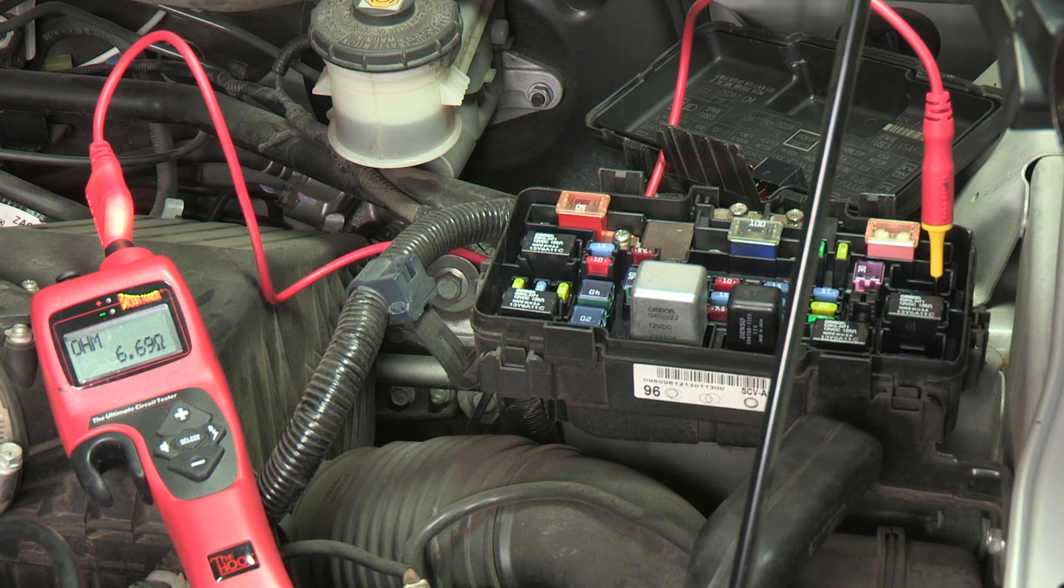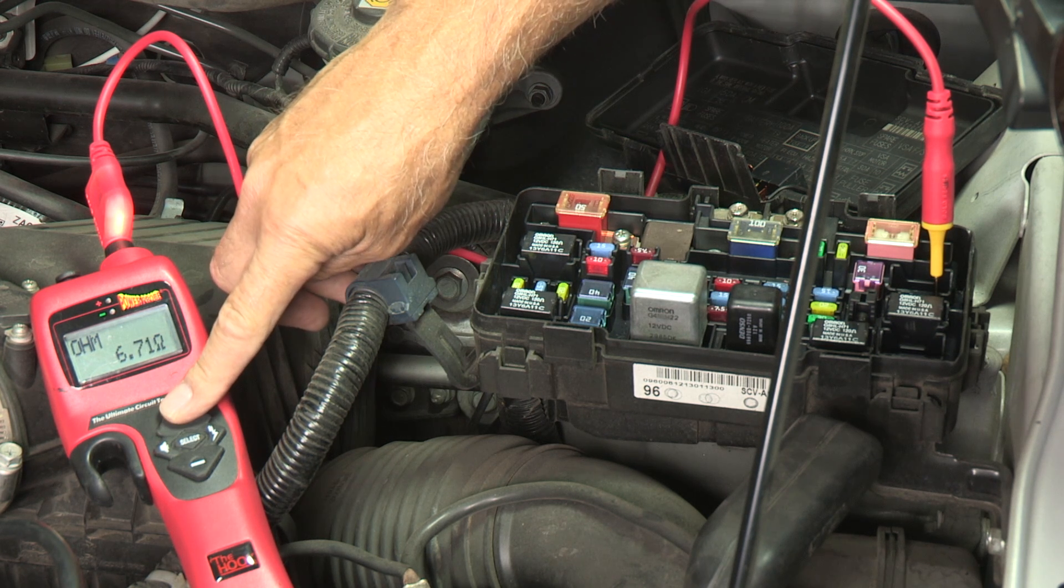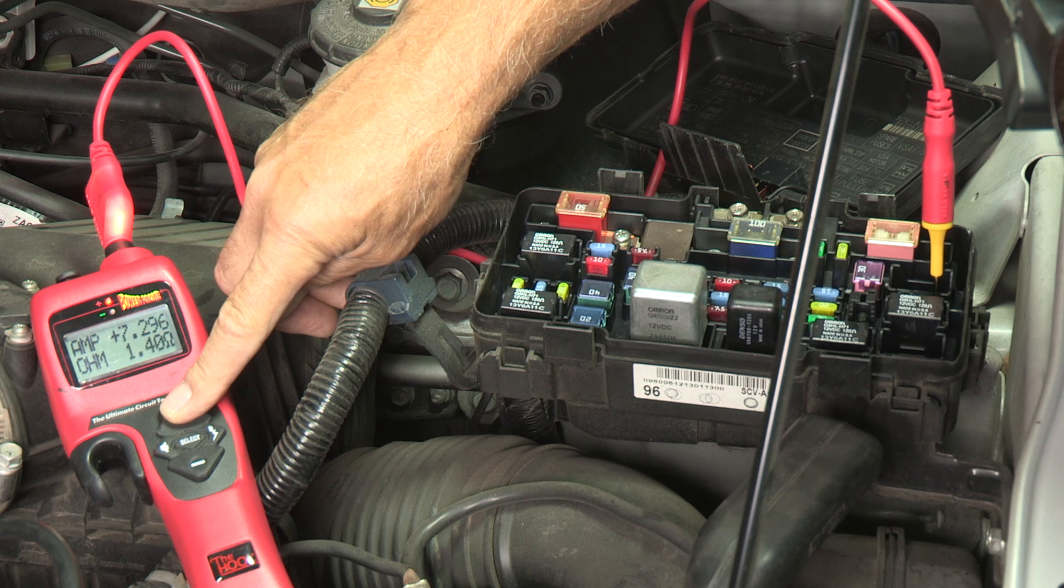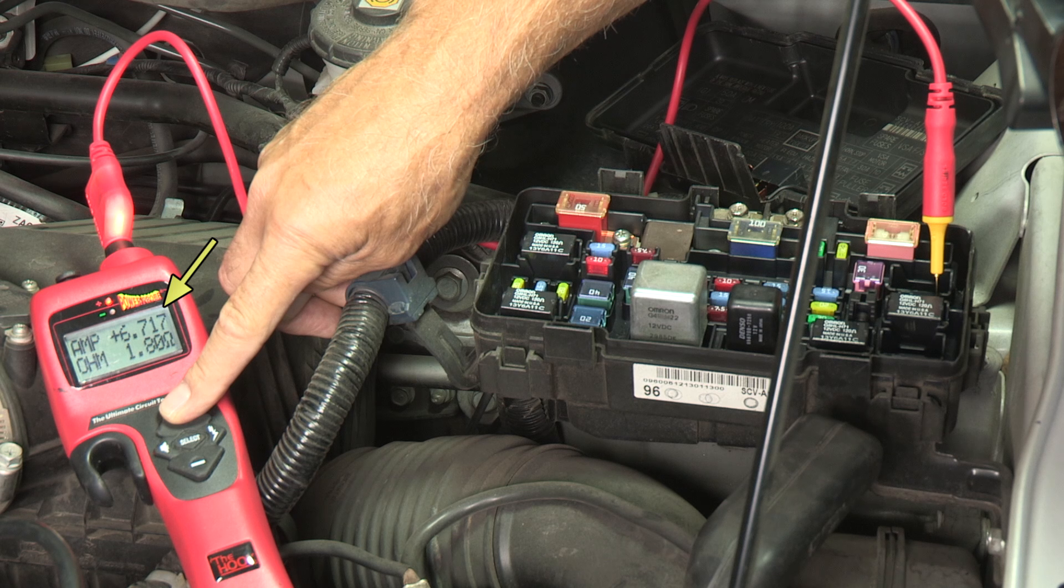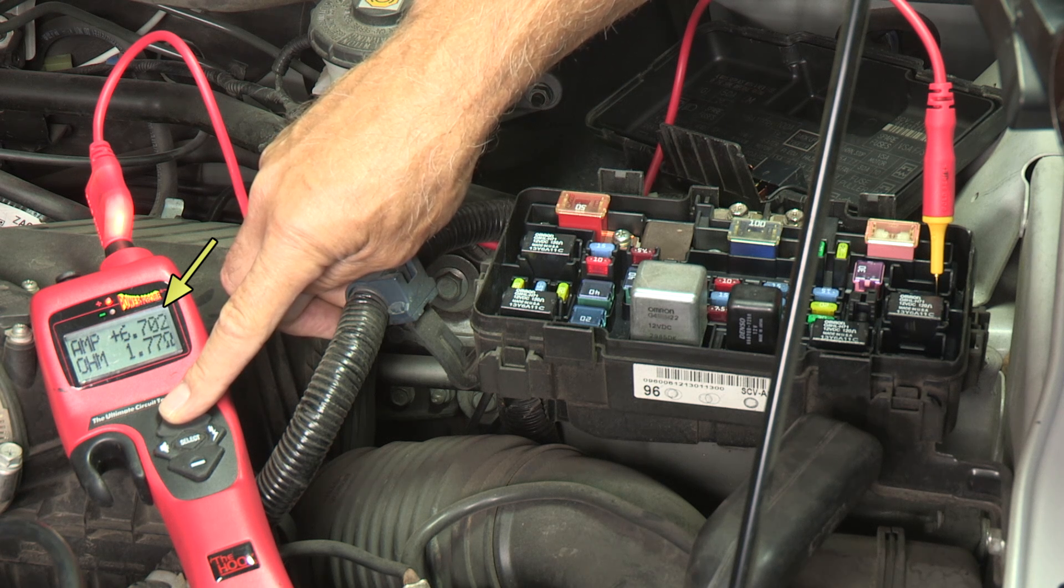Next, use the hook to supply battery power to the condenser fan by simply pushing the plus button on the hook's keypad. The fan turns on and the hook's display is showing approximately 6 amps and 1.8 ohms all on the same screen.